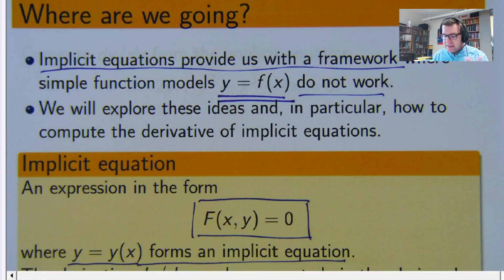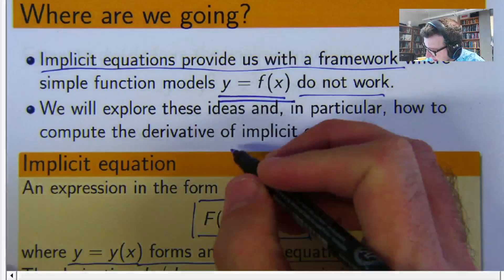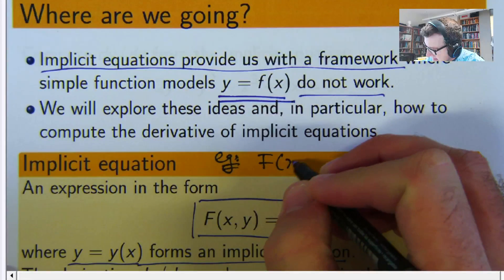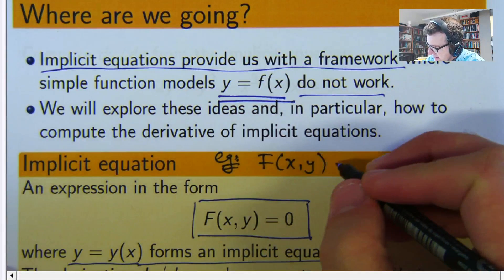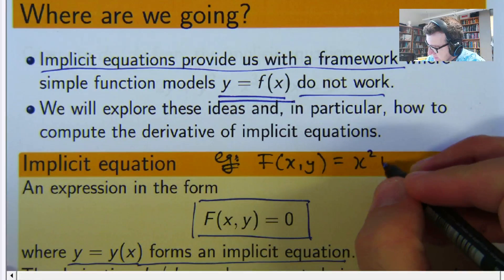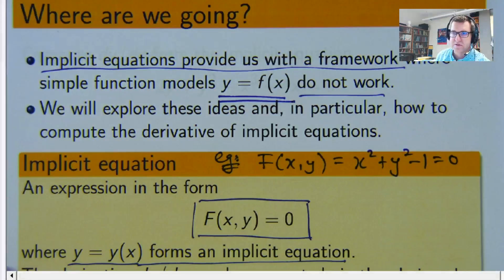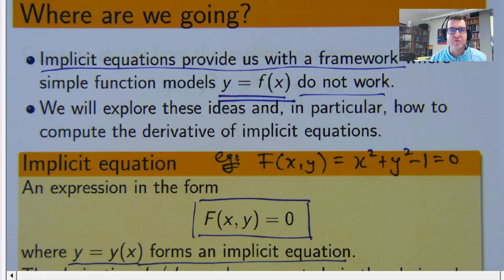But let me give you an example. An example might be something like f of x comma y equals x squared plus y squared minus 1 equals 0. That's an example of an implicit equation.